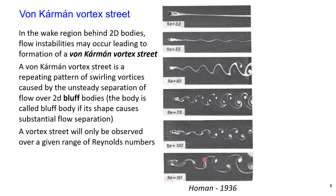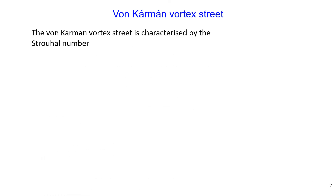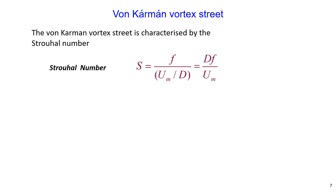The Reynolds number here is defined as approaching velocity multiplied by the diameter of the structure, divided by kinematic viscosity. The von Kármán vortex street is characterized by the Strouhal number, defined as the diameter of the structure multiplied by the vortex shedding frequency, divided by the approach velocity.